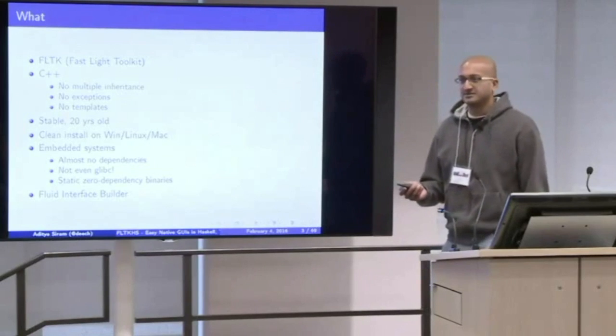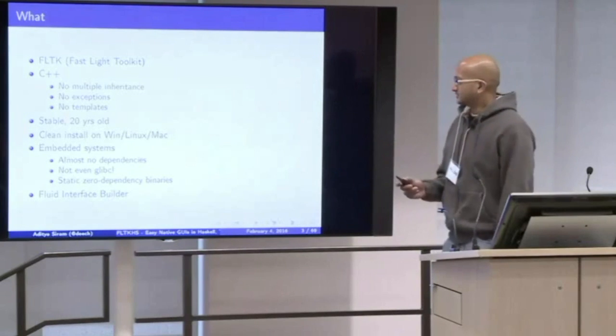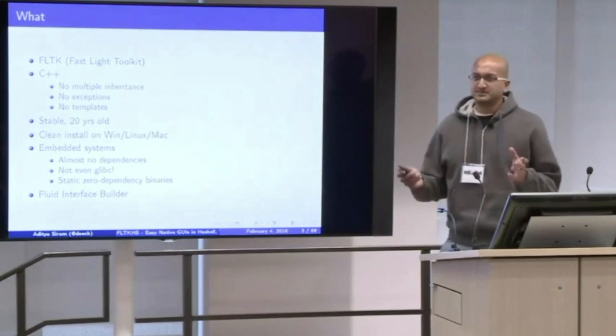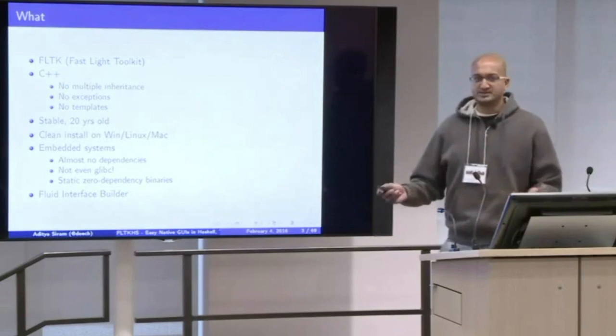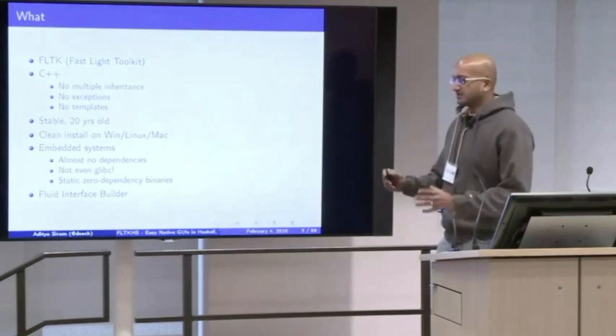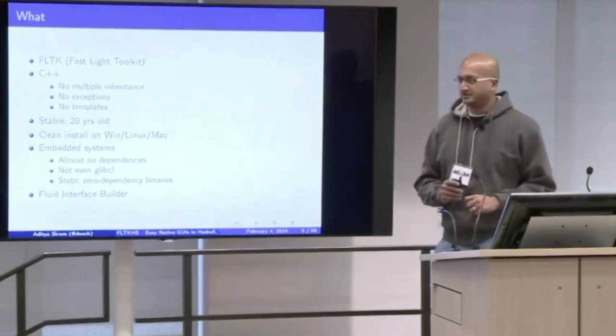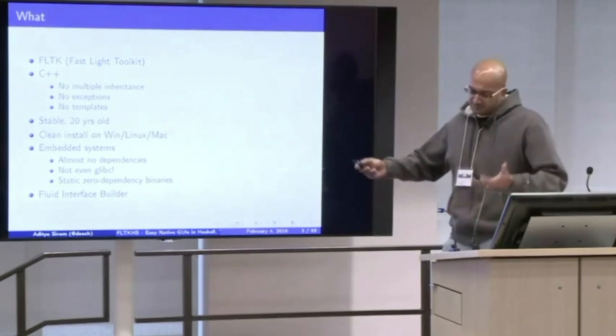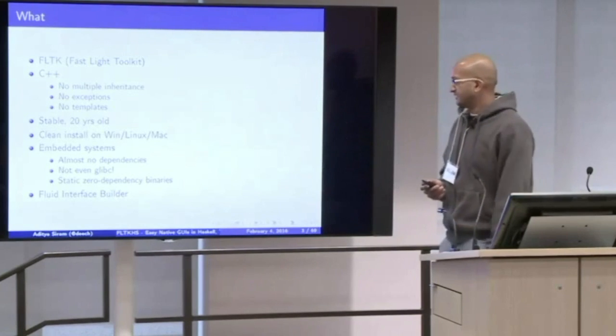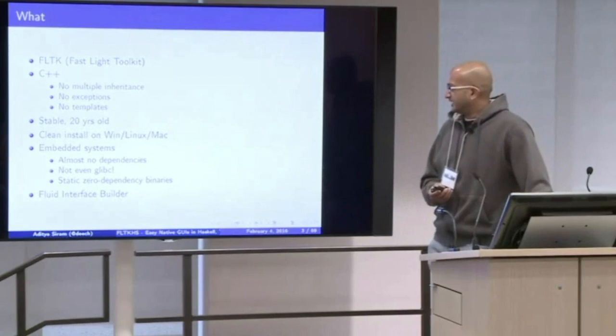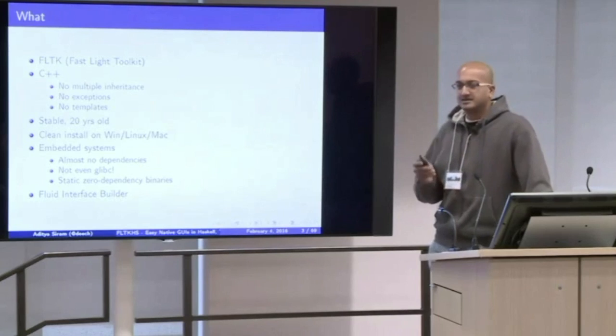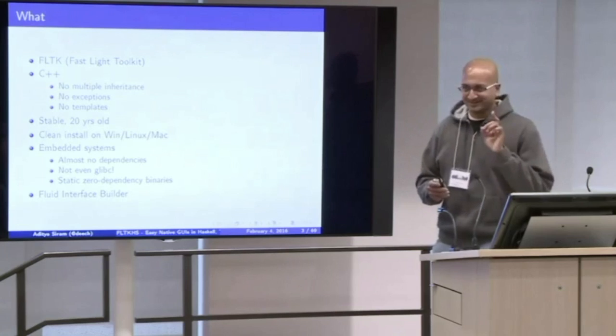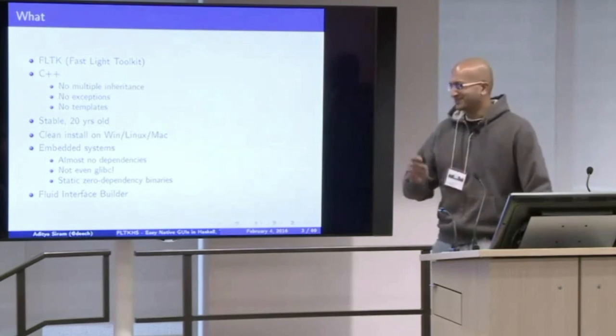So FLTK itself stands for Fast Light Toolkit. It was written in C++ for embedded systems. And because it was written for embedded systems, the C++ is relatively clean. There's no multiple inheritance, no exceptions, no templates. So it's all made so you can jam it into a very small binary. That's a really nice feature to have when you're trying to just write a light GUI of some sort. It's been around for 15, 20 years I think at this point. And it installs cleanly on Windows, Linux, and Mac. Caveat, it blew up somebody's Mac yesterday, so I'm working on that.